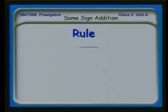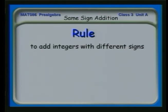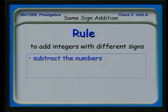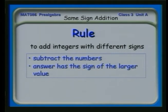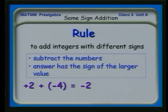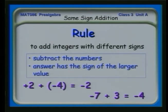So here's the rule: to add integers with different signs, subtract the smaller number from the larger number. Then the answer has the sign of the larger value. For example, plus two minus four — since minus four is the larger of the values, the answer is minus two. If I have minus seven plus three, minus seven is bigger; we subtract three from seven and get four, and the answer must be negative, so it's minus four.